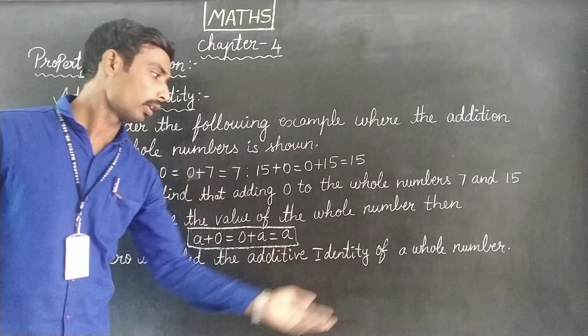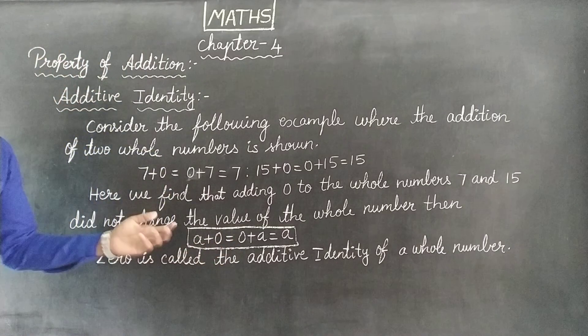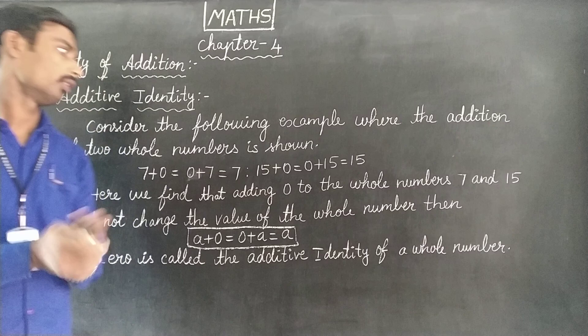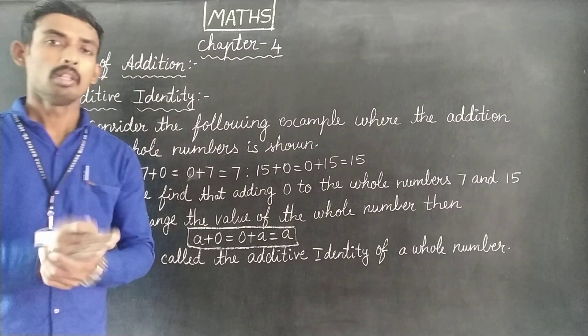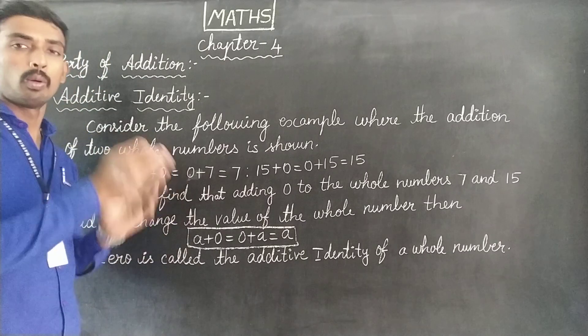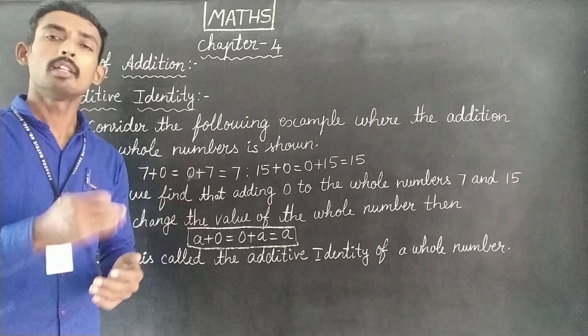So 0 is the additive identity for whole numbers. This is how 0 is the additive identity. If we have any whole number, the additive identity is 0.